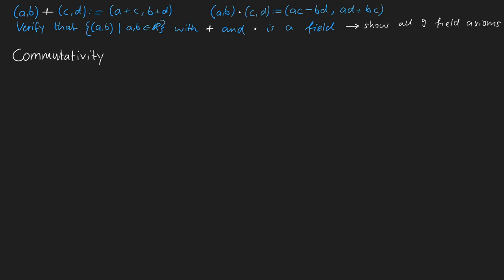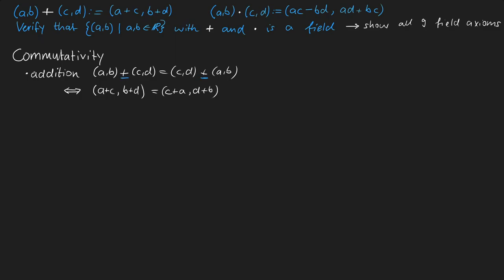Let's get started with the commutativity of addition, where we need to show that the pair (A,B) plus the pair (C,D) is the same as the pair (C,D) plus the pair (A,B). After applying the definition of addition we get (A+C, B+D) equals (C+A, D+B). That's the same because normal addition is commutative — we can flip C and A, and D and B.